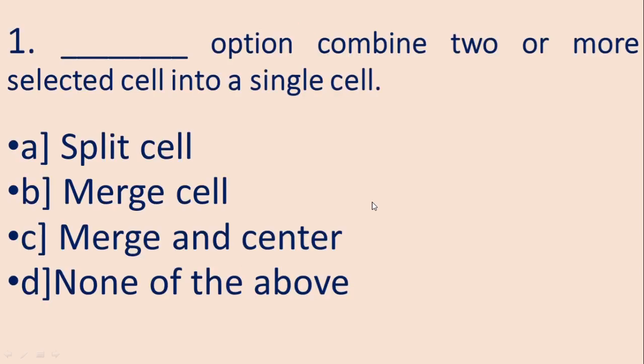So the first question is, dash option combine two or more selected cells into a single cell. The options are A. Split cell, B. Merge cell, C. Merge and center, D. None of the above. And the correct answer is B. Merge cell.